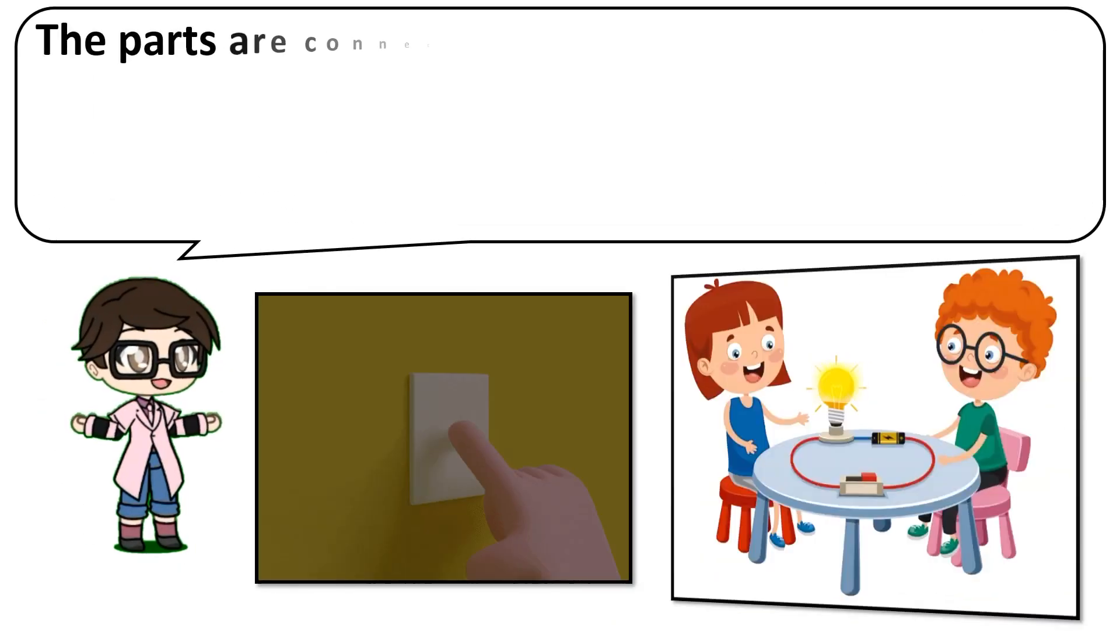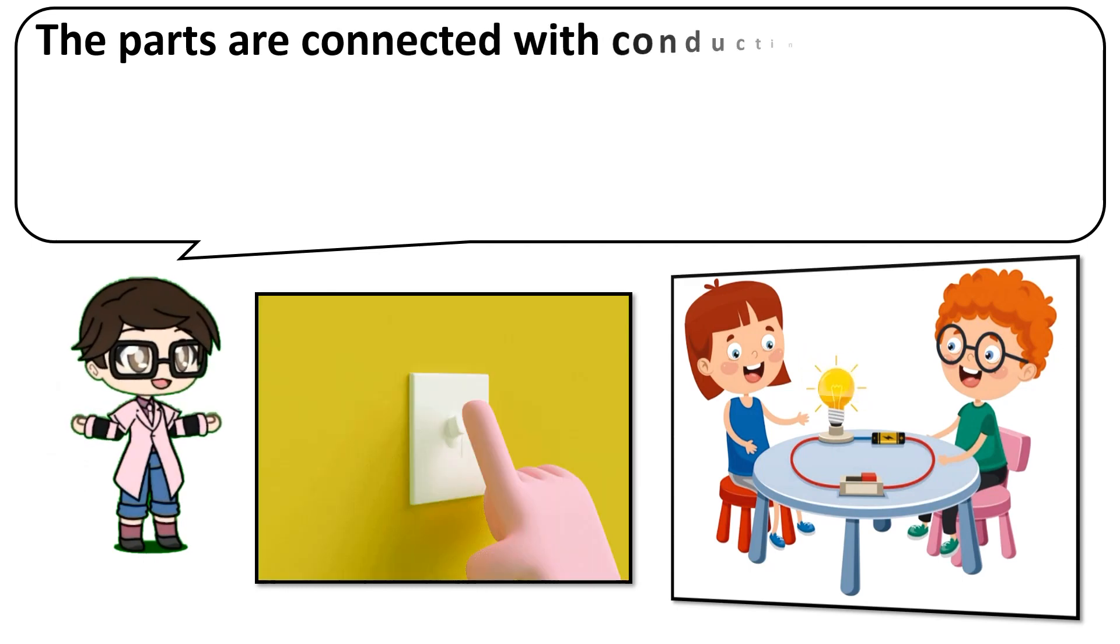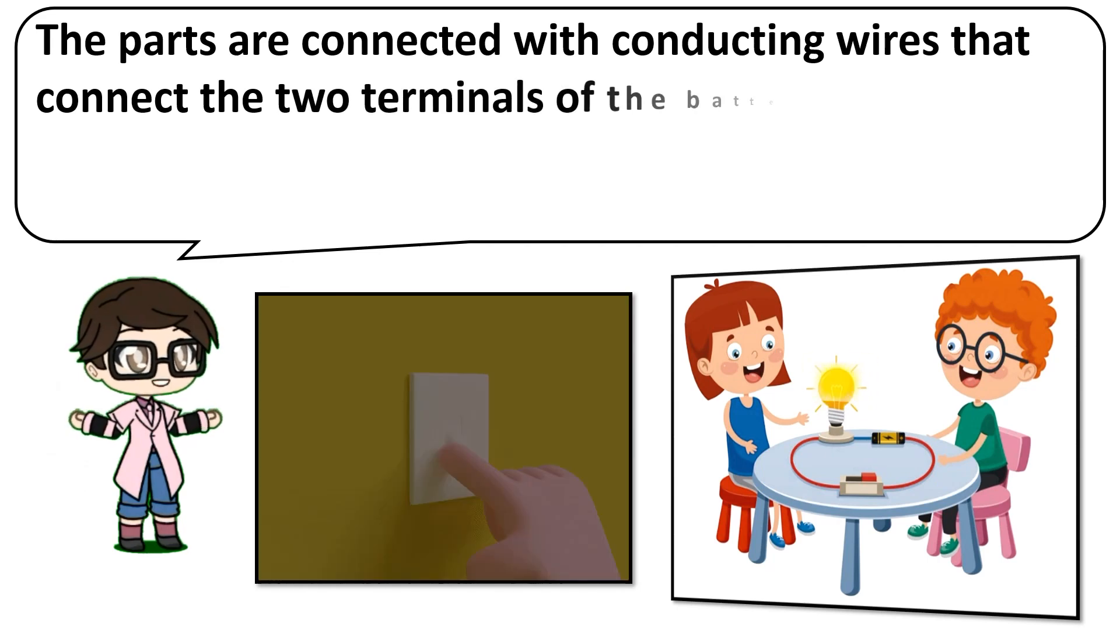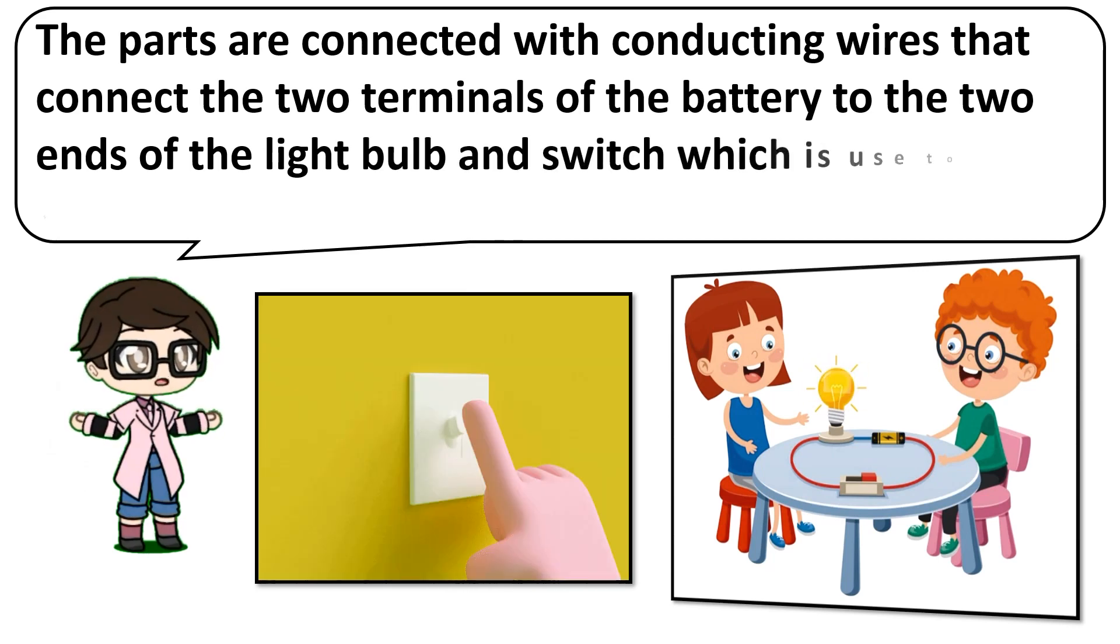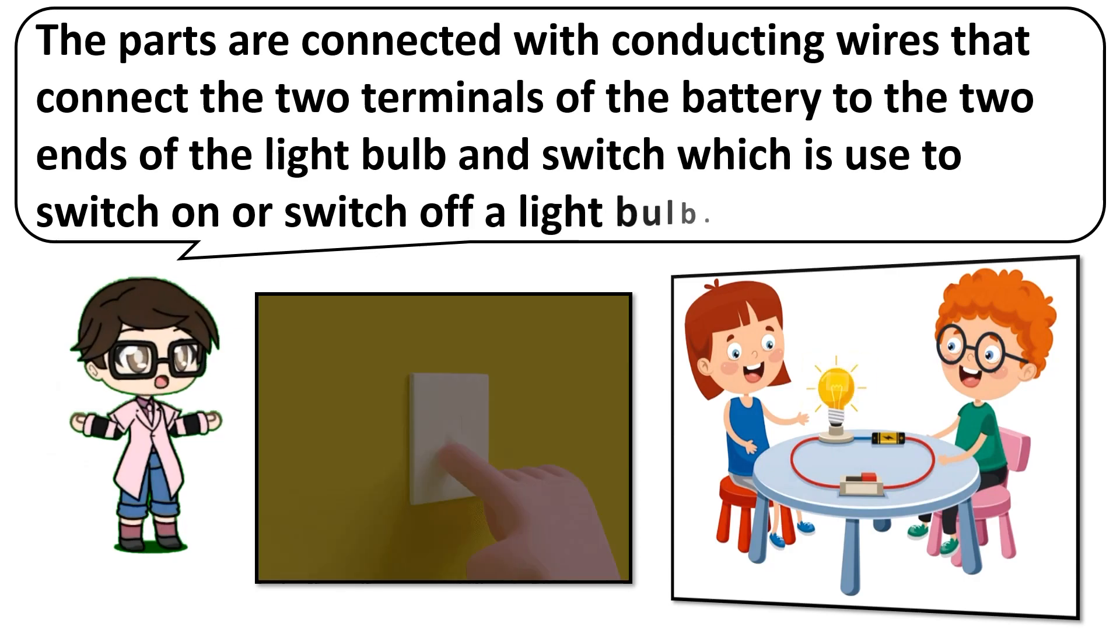The parts are connected with conducting wires that connect the two terminals of the battery to the two ends of the light bulb and switch, which is used to switch on or switch off a light bulb.